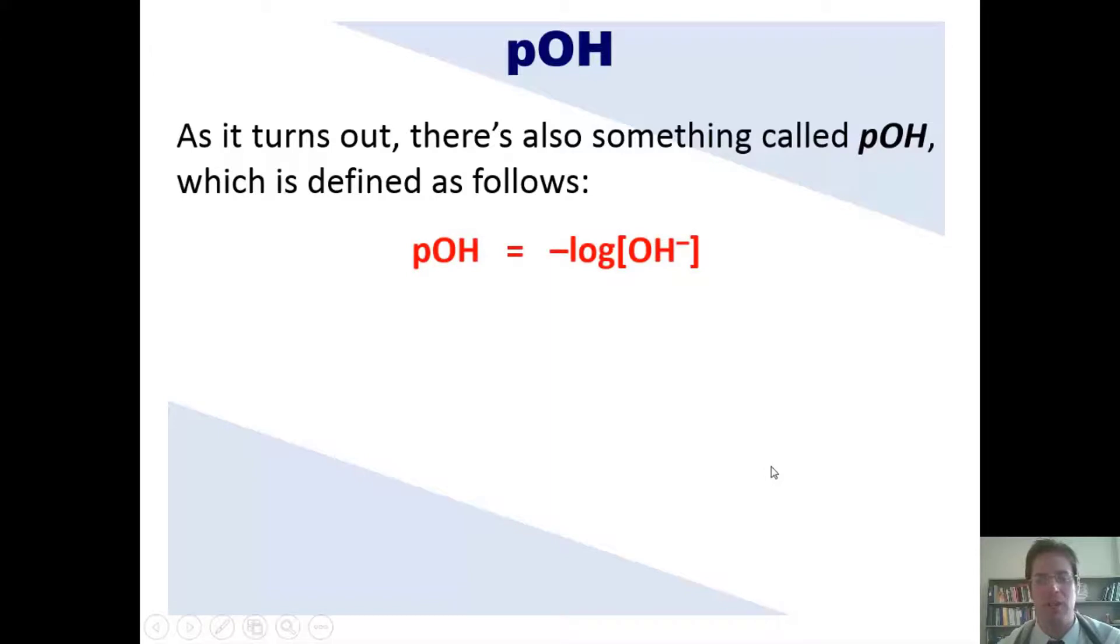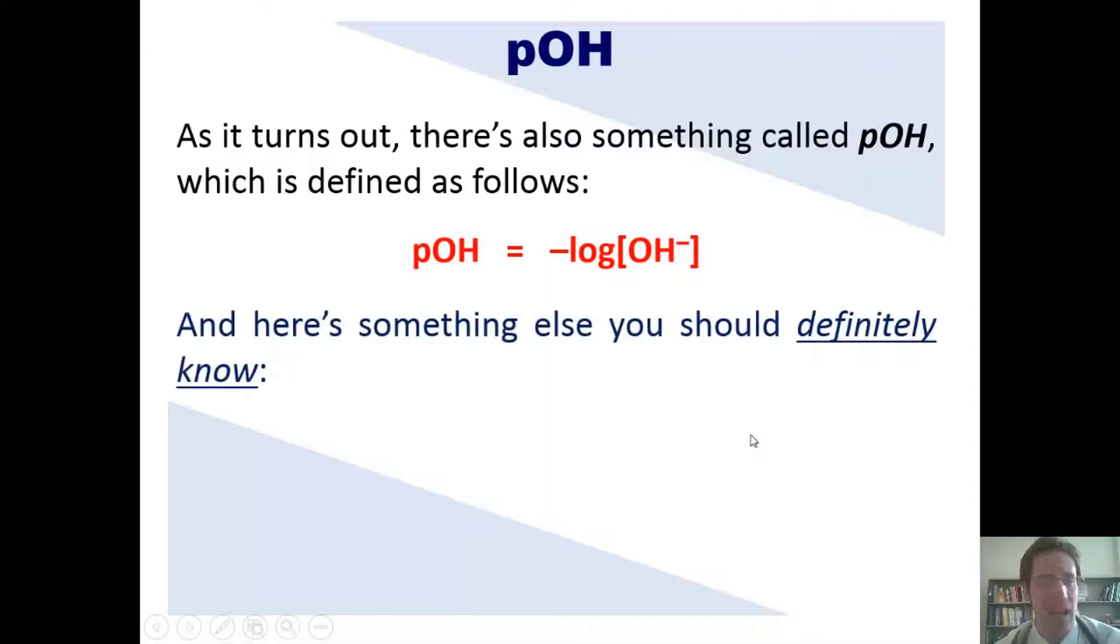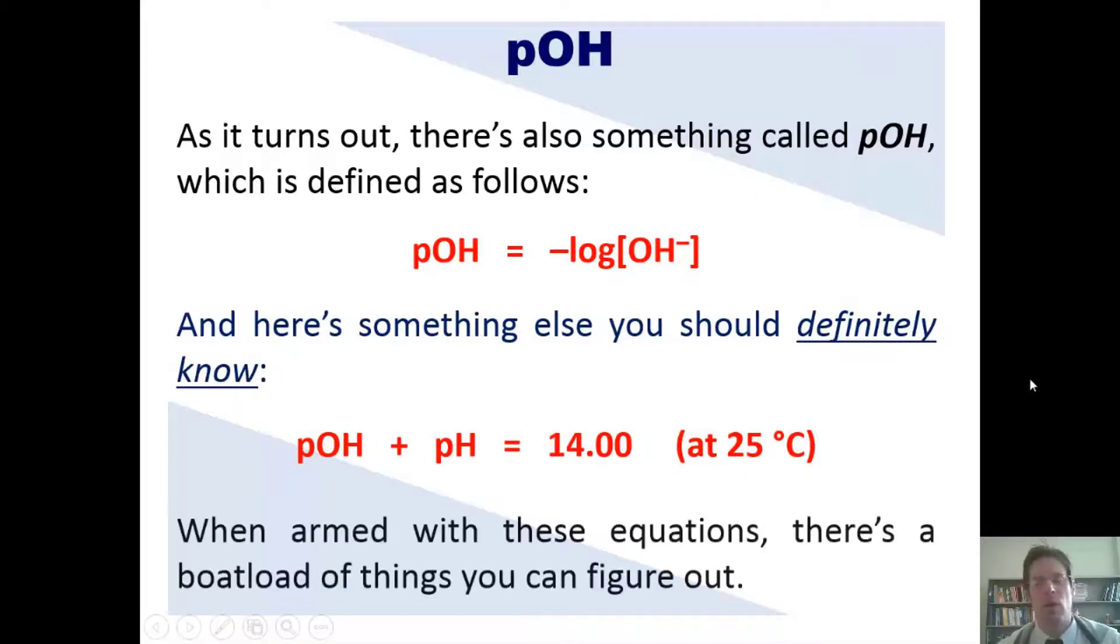As it turns out, there's also something called pOH, which is defined as follows: pOH is equal to negative log concentration of hydroxide. And here's something else you should definitely know—please, my students, have memorized this: pH plus pOH is always equal to 14 at 25 degrees Celsius. When you're armed with these equations, there's a buttload of things you can figure out, as I'll show you now with a wonderful example problem.